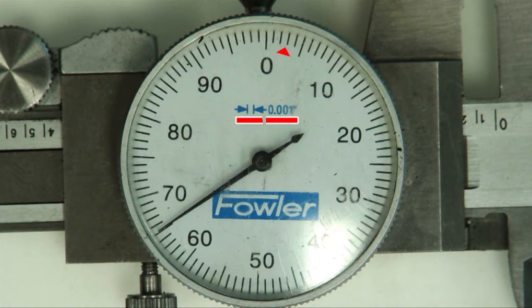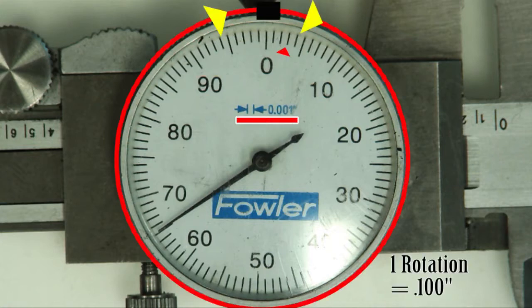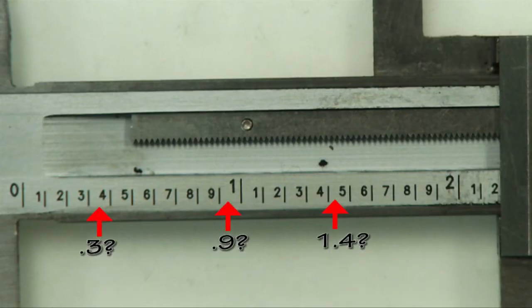The dial reads down to one thousandth of an inch. Here we see that one revolution of the dial will equal 100 thousandths of an inch. The dial is used to read the increments between the lines on the linear scale.